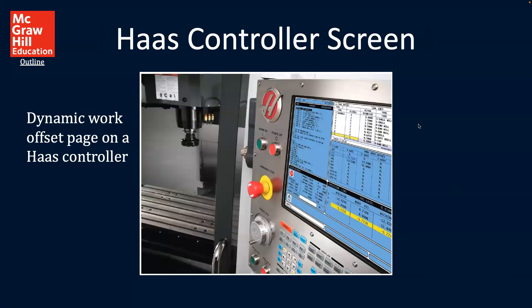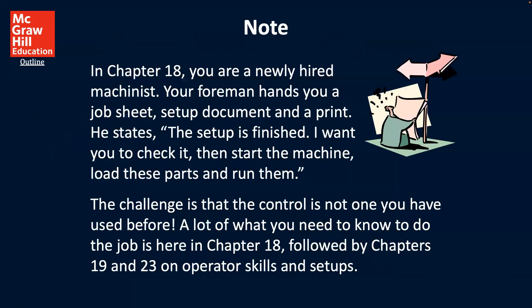This is looking at the controller screen for HAS. It's a dynamic work offset page on the HAS controller, so we're looking at a particular page. There are various pages that can be displayed, and it's all going to be tied in with the controller based on what you're asking it to do.